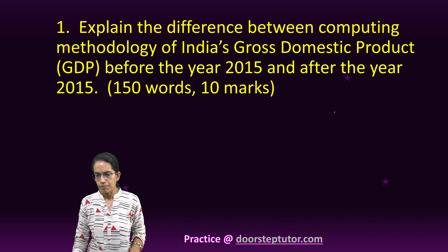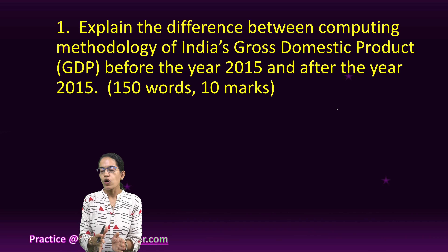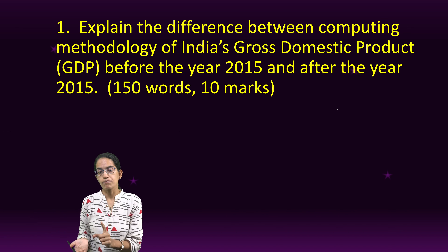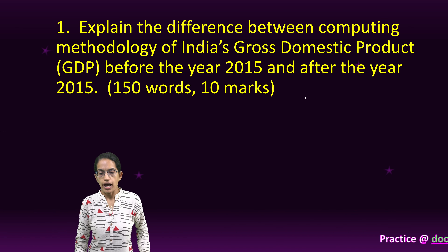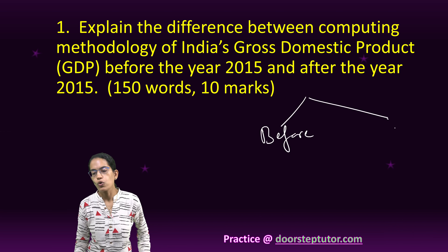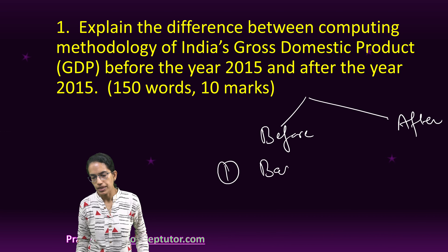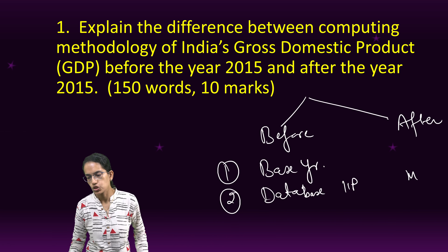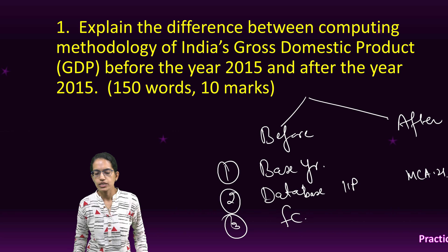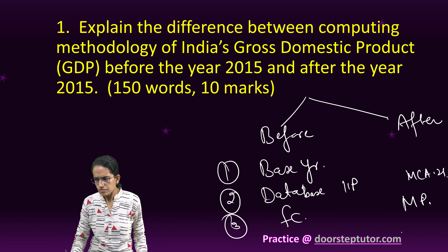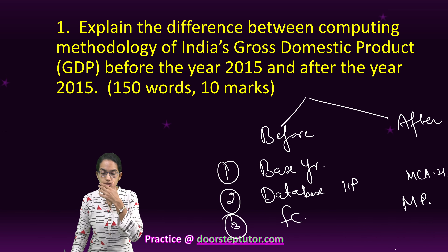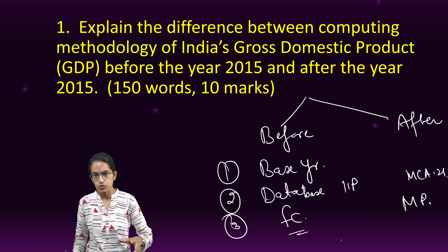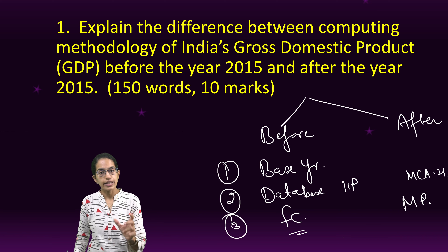The IIP, which is the Index of Industrial Production, was updated to the Annual Survey of Industries (ASI), which included only those companies registered under the Factory Act. To summarize the differences broadly: first is the difference in the base year; second is the change in the database from IIP to MCA21; third is calculation at factor cost versus market price. Before 2015, farm produce from agriculture was used as a proxy for calculating agricultural income.